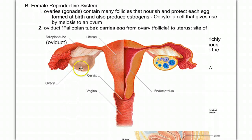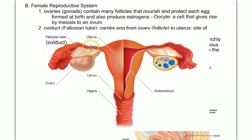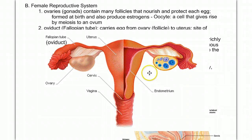When an egg is released, it's pulled up into the oviduct, which leads to the uterus. It's in the oviduct where fertilization usually occurs. The uterus is a highly vascularized muscular organ that houses the growing embryo in the event of a pregnancy.